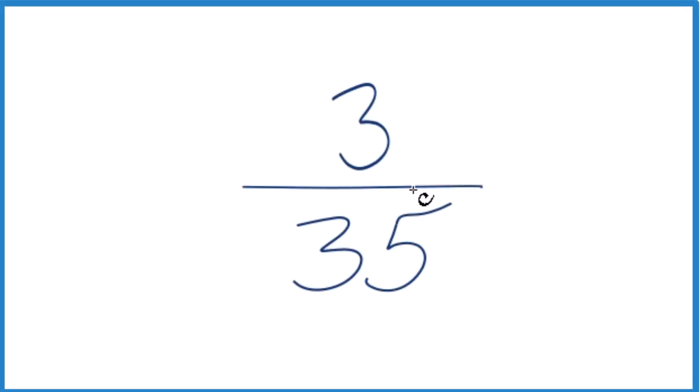All right, let's simplify this fraction 3/35. What we want to do is find an equivalent fraction that's equal to 3/35, or 3 divided by 35. It's just that the fraction has been reduced or simplified.